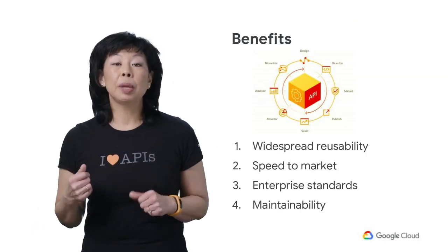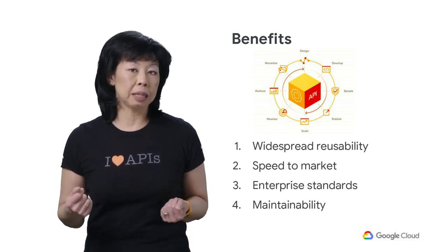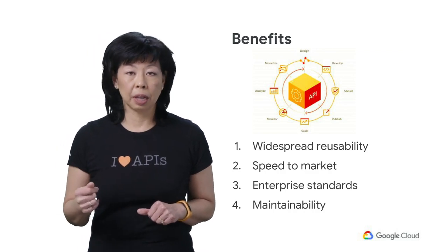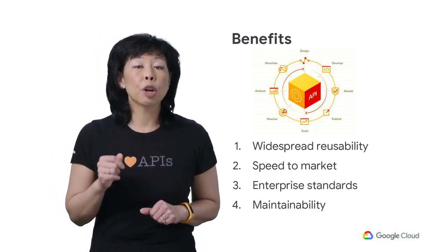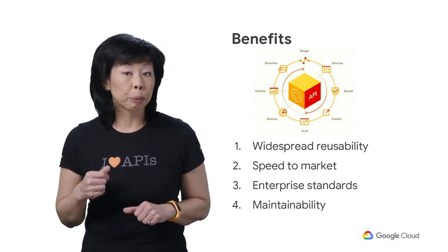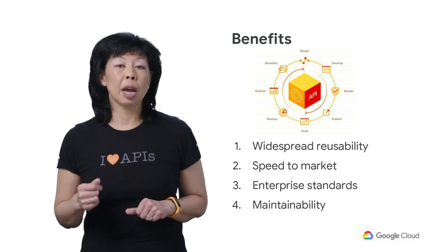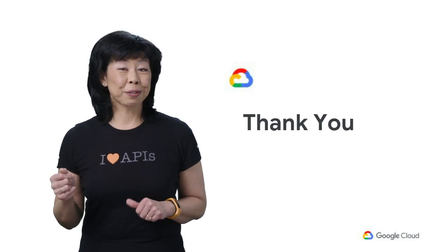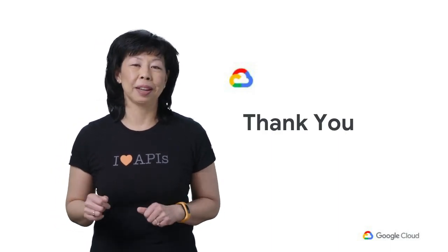The Apigee Edge API product, designed from the outside in with the application developer's needs in mind, along with reusable assets following corporate standards like security, traffic management, and error handling, coupled with documentation for the developer to get started quickly and improve speed to market, is what puts the Apigee Edge API product in high demand. Thanks for your time, and be sure to watch the next video to learn about the API product mindset.